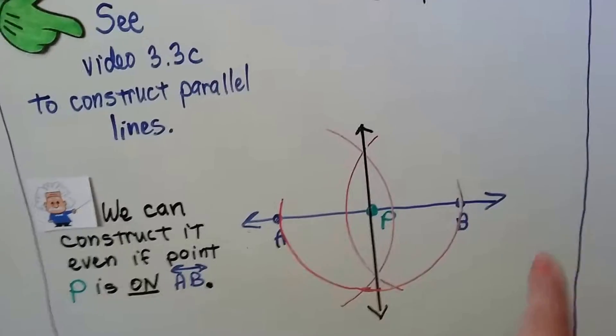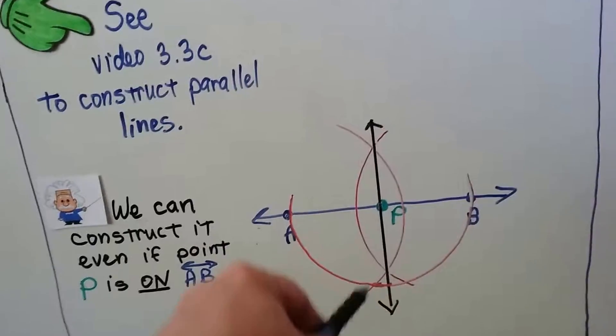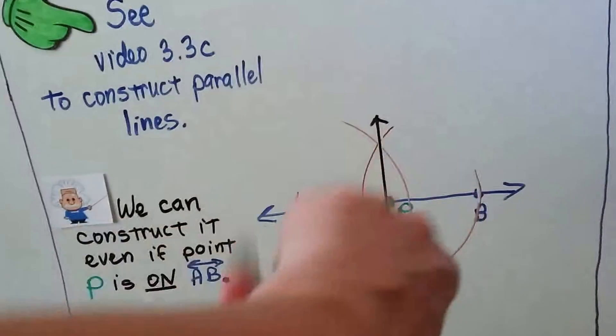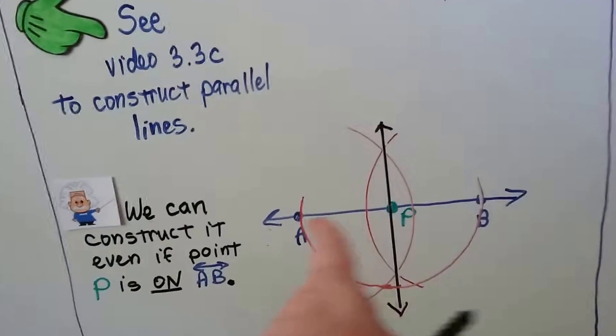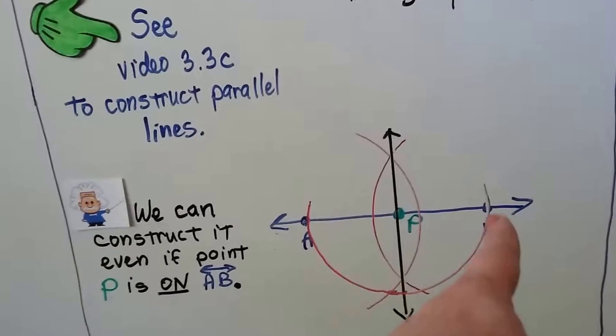What if it just said it was line L and we didn't have A and B on here? You just put it here and find A and B by doing one huge arc that crosses at two places, A and B.